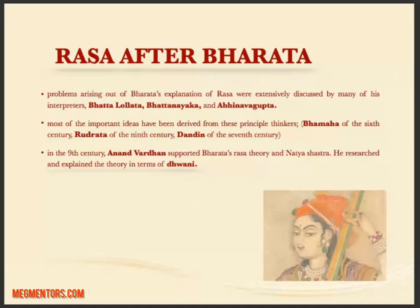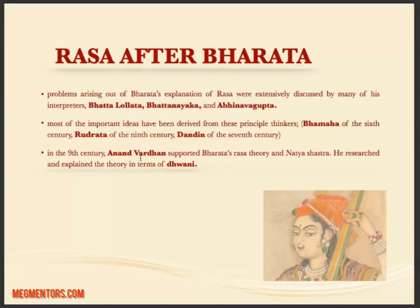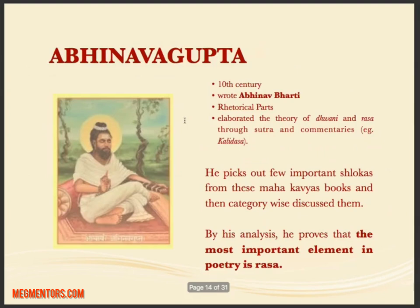After Bharat Muni, certain problems arose from his explanation of Ras and many other philosophers and sages contributed. Much of Indian literature was contributed by meditators, sages, and philosophers — which is why we don't just call them authors. Important names include Bhatt Lolat, Bhatt Nayaka, Abhinav Gupta, Bhama, Rudrata, Dandan, and Anandvardhan. Abhinav Gupta wrote Abhinav Bharati and elaborated the theory of Dhvani. He picked up important shlokas from Mahakavya works like those of Kalidas and proved that poetry should evoke Ras — that is its most important objective.